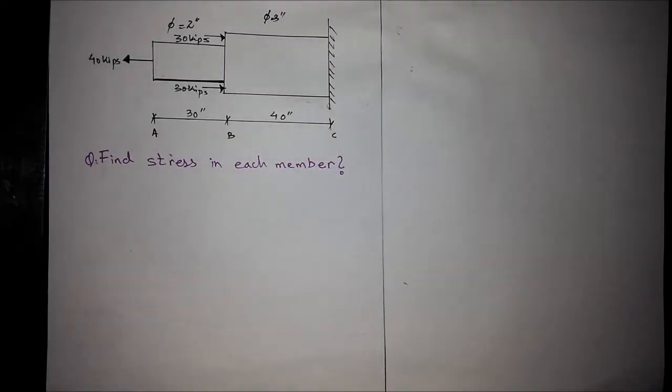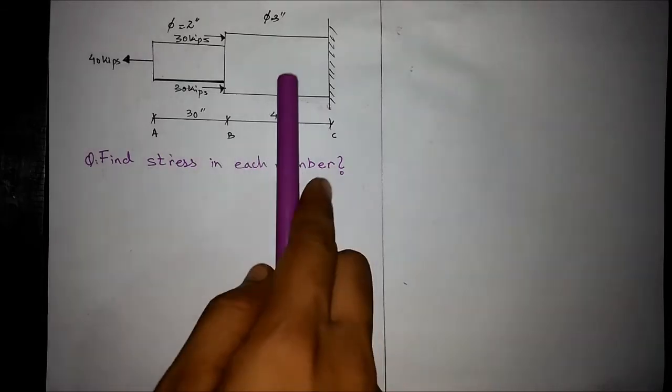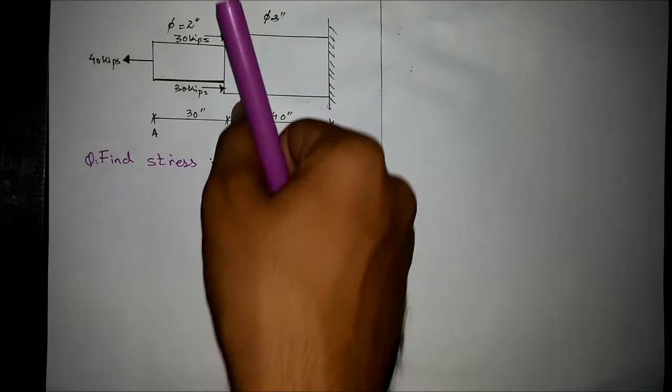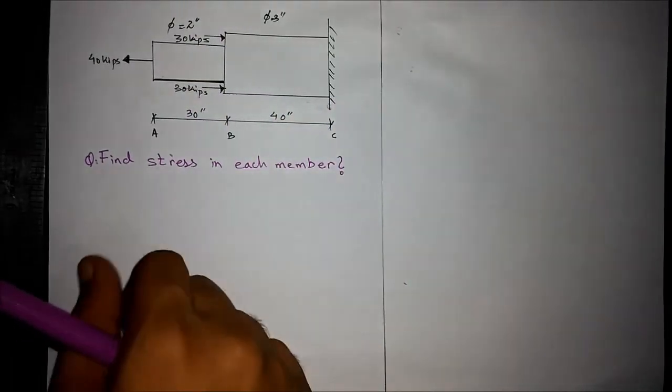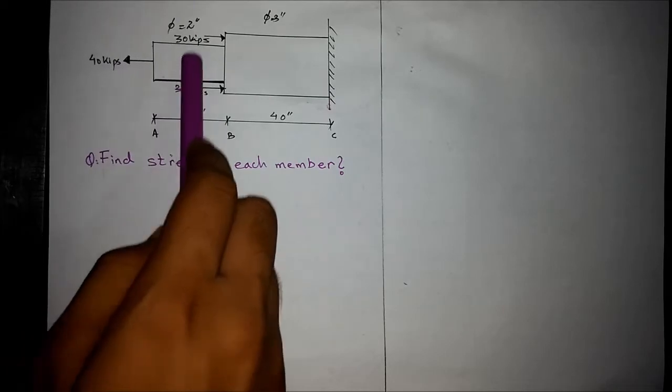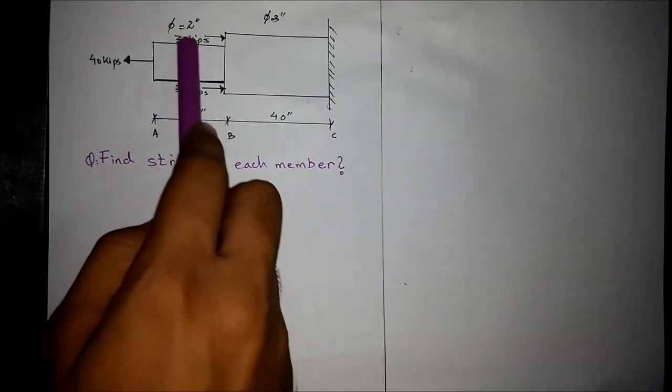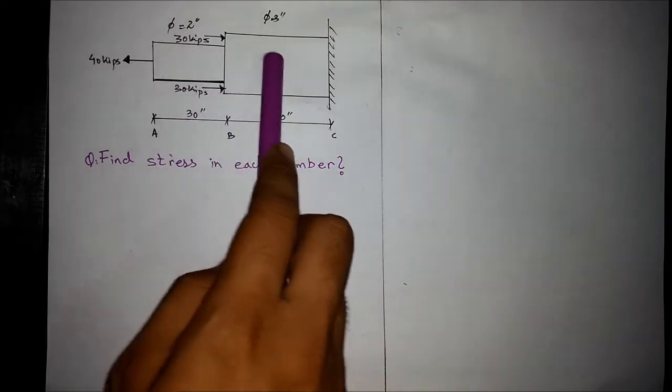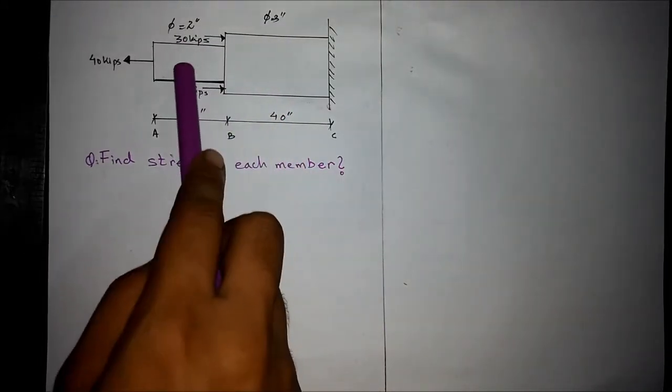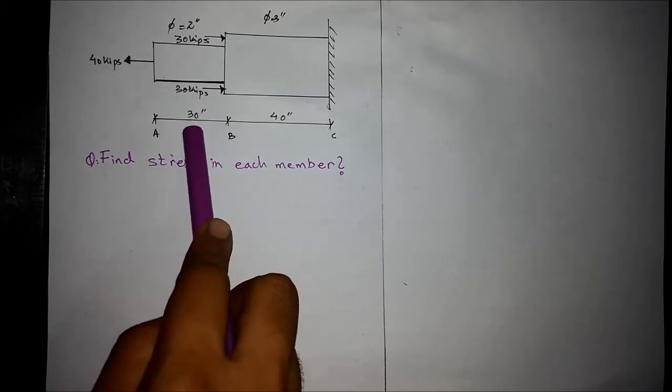In this example, we are given a statically determinate assembly in which member 1 and member 2 are connected by a fixed joint. The forces are given as follows: 40 kips, 30 kips, 30 kips. The diameter of member 1 is 2 inches, the diameter of member 2 is 3 inches, and the length of the first member AB is 30 inches, and the length of the second member BC is 40 inches.